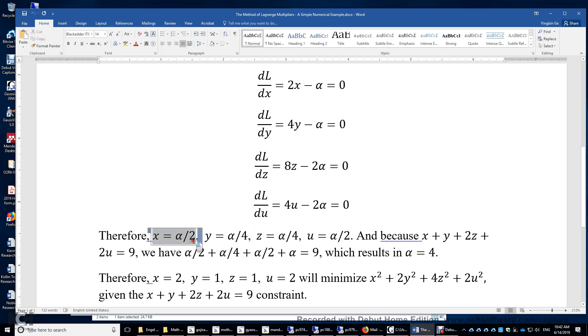And therefore, x equals 1 half of alpha, y equals 1 quarter of alpha, z is 1 quarter of alpha, u equals 1 half of alpha. So really, x, y, z, and u can be expressed in terms of alpha now. And because of the constraint over here, we plug in the expressions of x, y, z, and u here. And we have this linear equation that contains only one variable alpha, and then alpha equals 4.